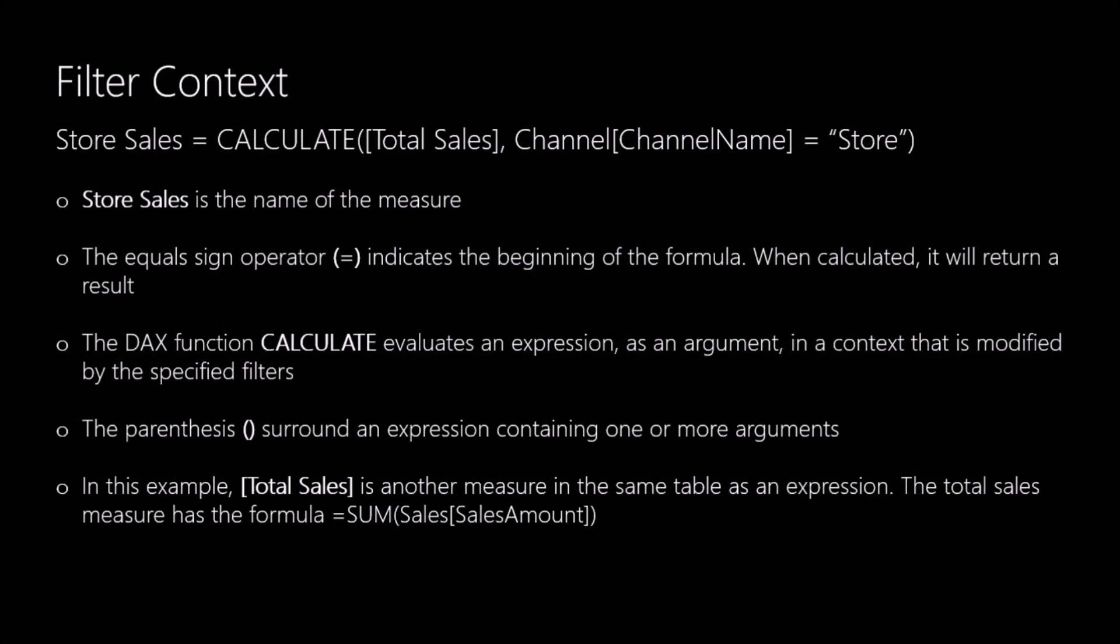To help clarify this a bit better, let's take a look at an example of a function to show you how the filter context operates. We'll start off by creating a new measure here which we'll call Store Sales, and for this we're going to use the CALCULATE function. The CALCULATE function evaluates an expression which is passed in as an argument in a context that is modified by specified filters. So in this example, Total Sales is another measure which we created in the previous example, and the Total Sales measure has the formula SUM of the Sales Amount column in the Sales table.